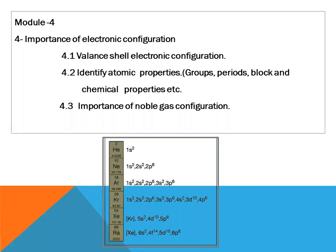Now we come to module number four. In this module we will study the importance of electronic configuration — why we need it. First, we discuss the valence electronic configuration and how to write it. Second, we use it to identify atomic properties: we can predict the group, period, block, and chemical properties with the help of valence configuration.